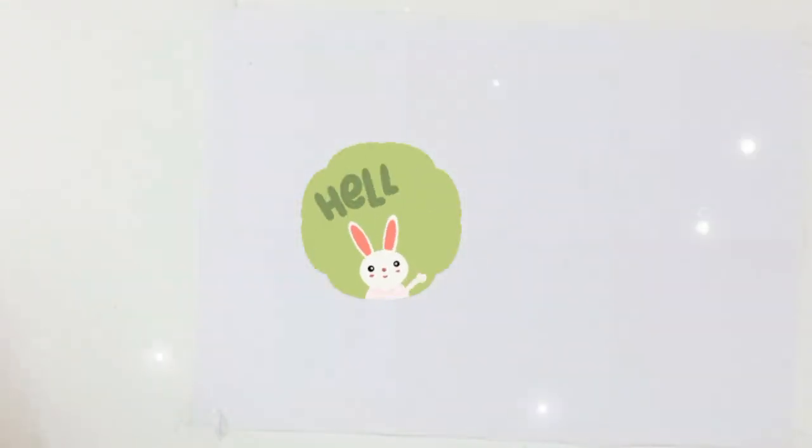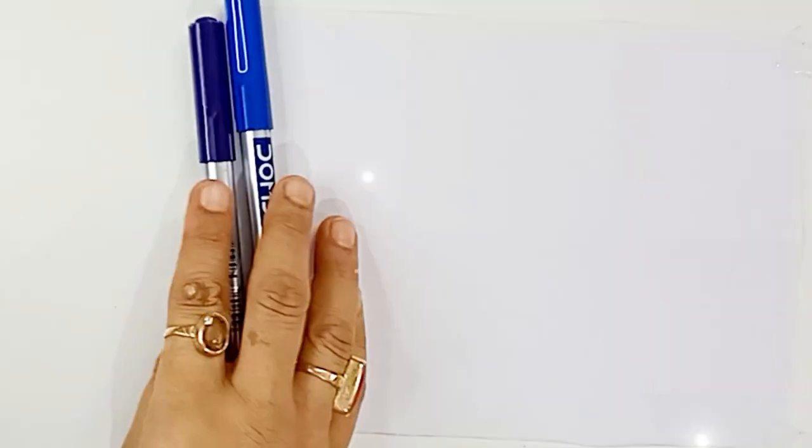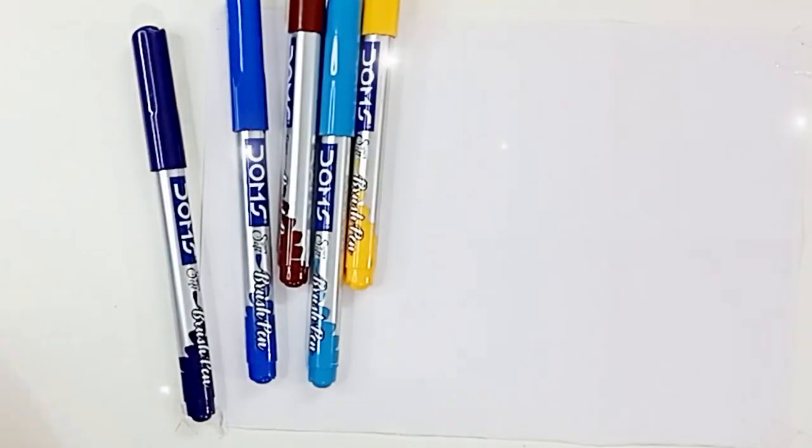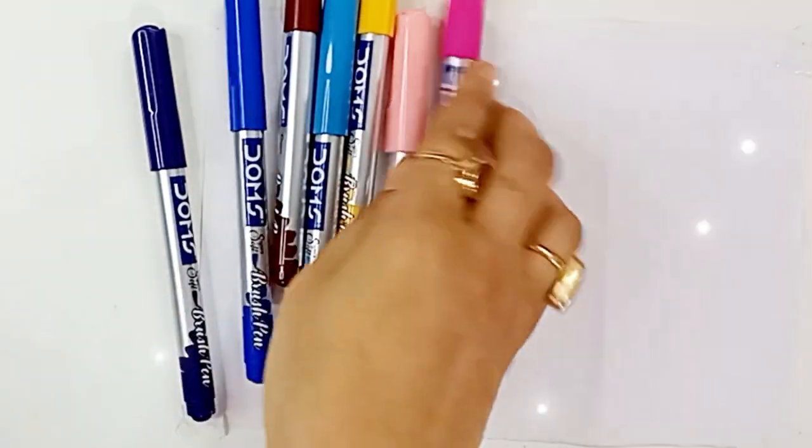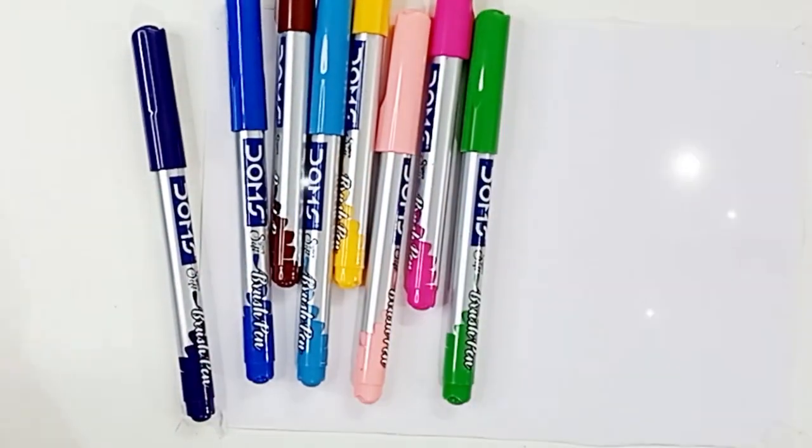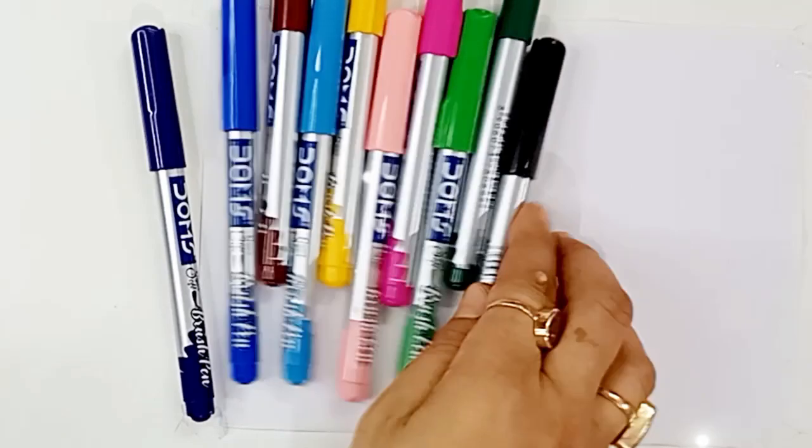Hello kids, let's learn some colors and shapes. Violet color, blue color, brown color, sky blue color, yellow color, light pink color, pink color, light green color, dark green color, black color.